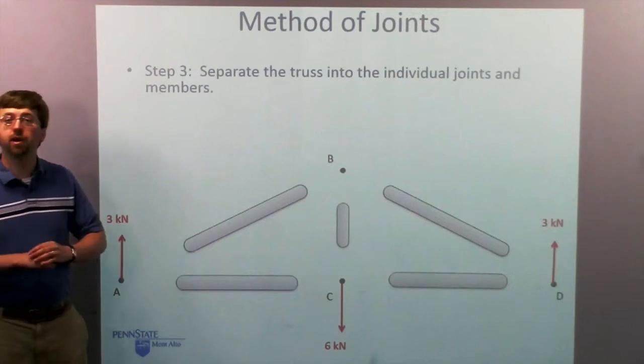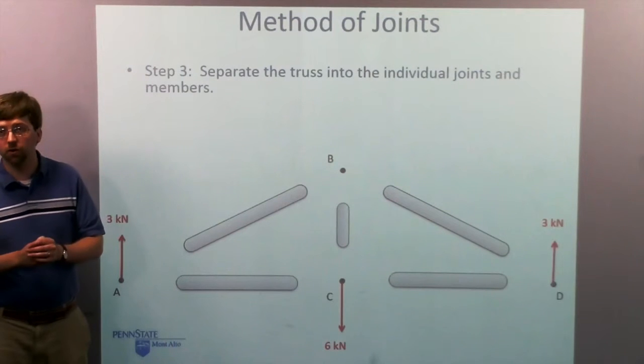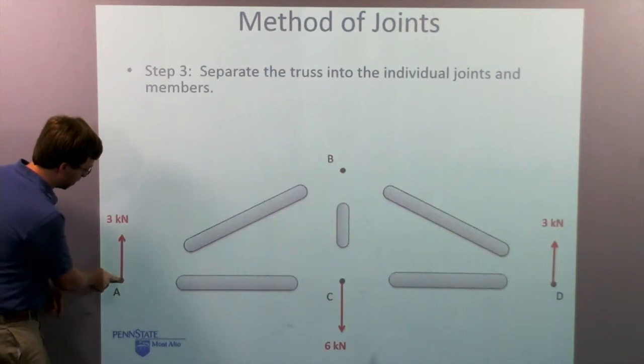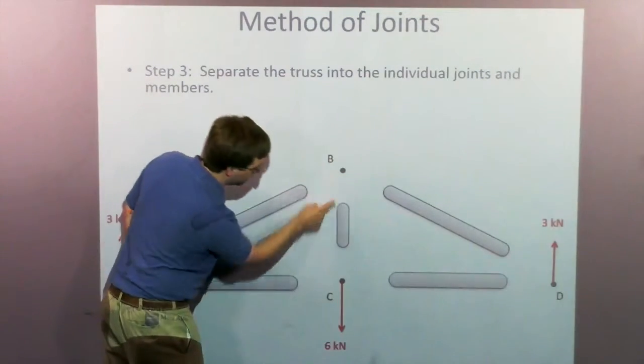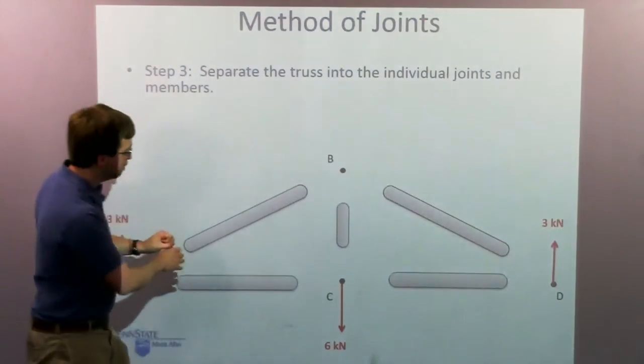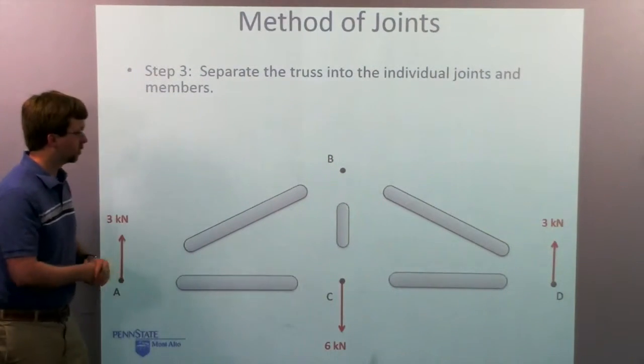So step three, I'm going to separate the truss into individual joints and individual members. So here I've got the pin at A, the pin at B, the pin at C, and the pin at D. And each of these members connecting all those pieces as well.